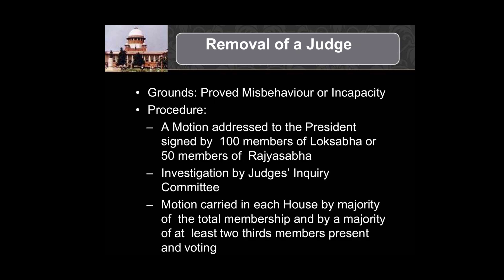There is a process to remove a judge which is called impeachment. This impeachment can be done only in case of proven misbehavior and incapacity. It is a very difficult procedure — a motion is passed by both the Houses of Parliament by two-thirds majority. A motion addressed to the President should be signed by at least 100 members of Lok Sabha and 50 members of Rajya Sabha. An inquiry committee examines the charges against the judge. No judge of India has been impeached so far.